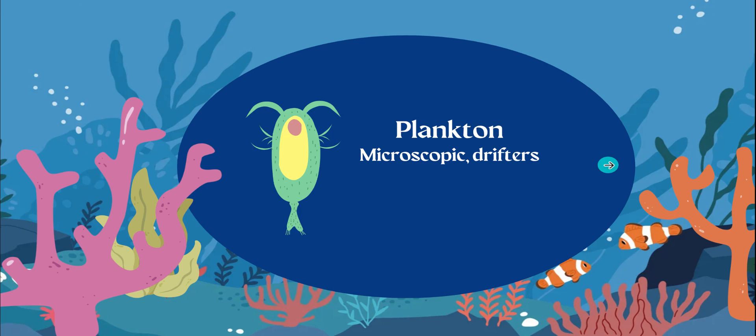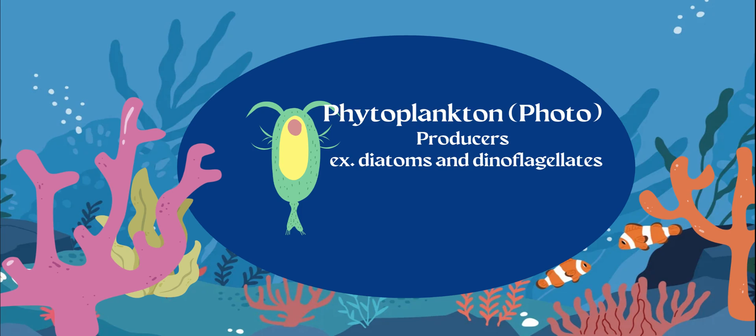For today, let's talk a little bit about plankton. All plankton are going to be microscopic and they are going to be drifters, meaning they don't really swim well. So when you think of SpongeBob and you think of plankton, he doesn't really swim well and he is microscopic, very small. So there's a few types of plankton.